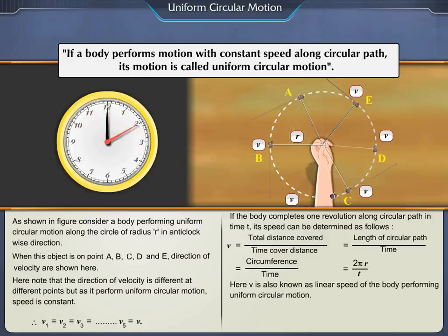Here, V is also known as linear speed of the body performing uniform circular motion.